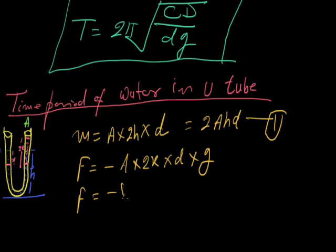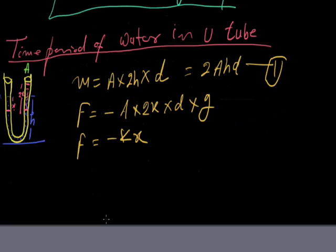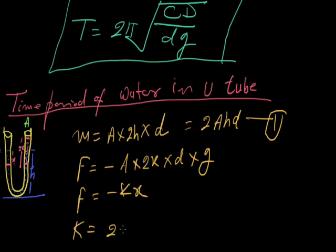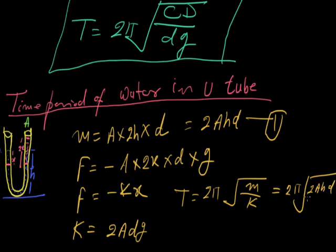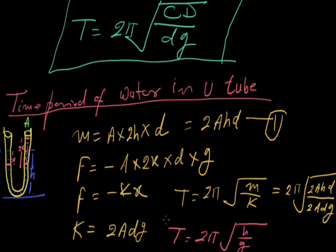We know that F equals minus Kx. Comparing these two, K equals 2·A·d·G. So the time period T equals 2π√(M/K), where M equals 2AHd and K equals 2AdG. So the time period T equals 2π√(H/G). This is the time period of oscillation of water in the U-tube.